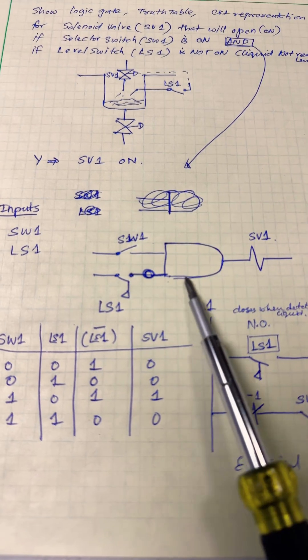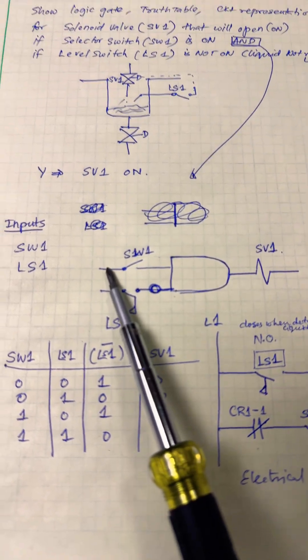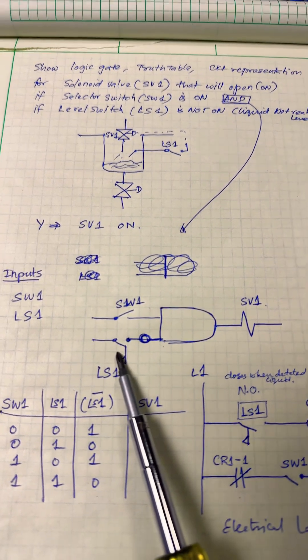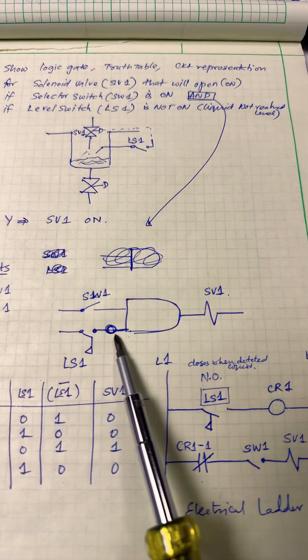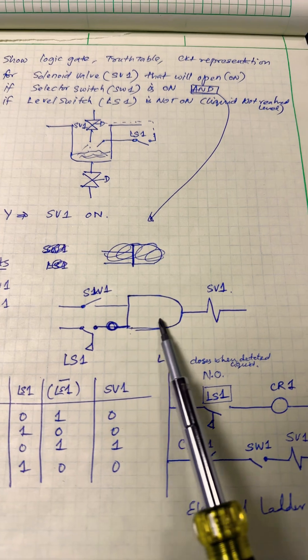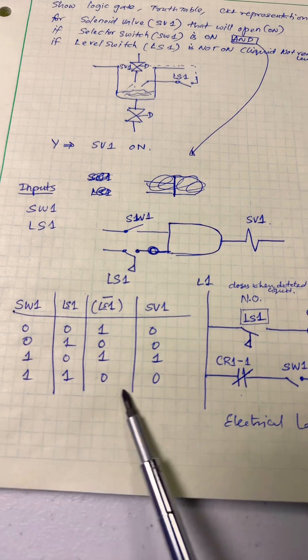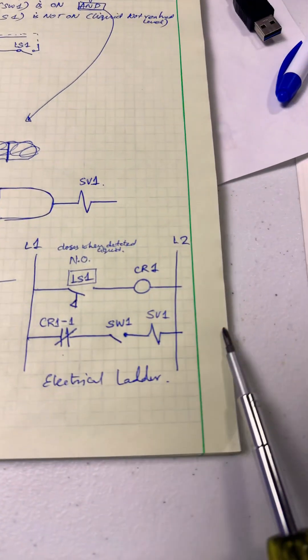But we want when the selector switch is on, we AND the level switch when it is not made. That's why we use a NOT indicator here, and then that turns out the output Y. Here is the representation of the truth table.